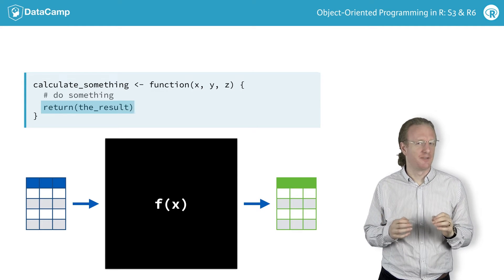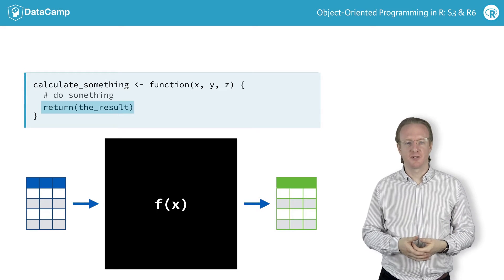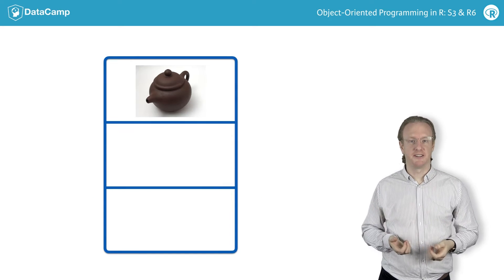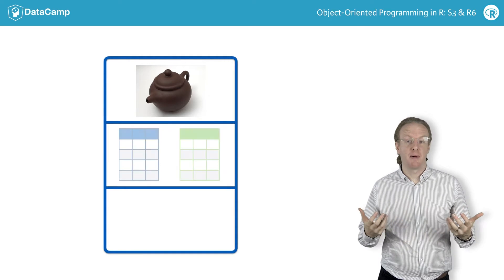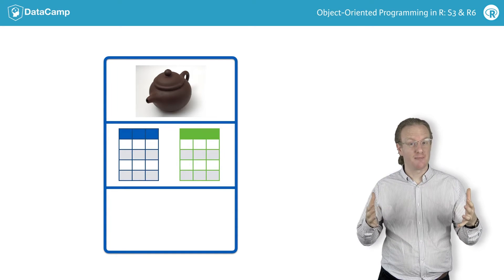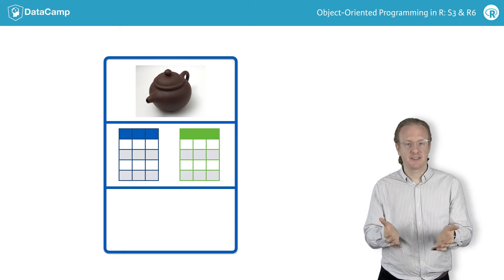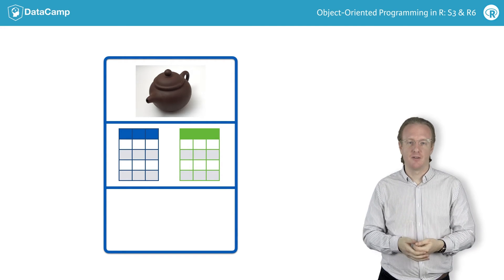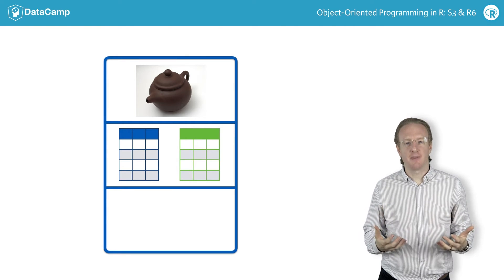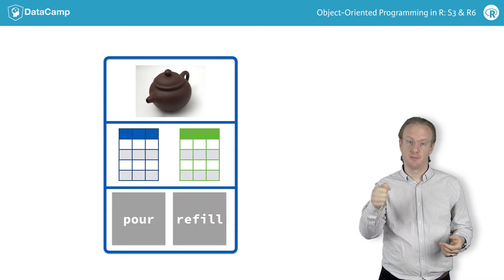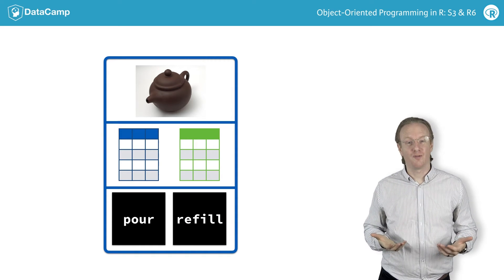Object-oriented programming has a different approach. In it, you start by thinking about the objects that you have to work with, in this case a teapot, and then you think about what data you need to describe the object. For a teapot, you might want to store the total capacity and how much liquid is currently stored in the pot. Next, you think about the functionality of that object. The main purpose of a teapot is to pour tea, so you'd add a pour function.